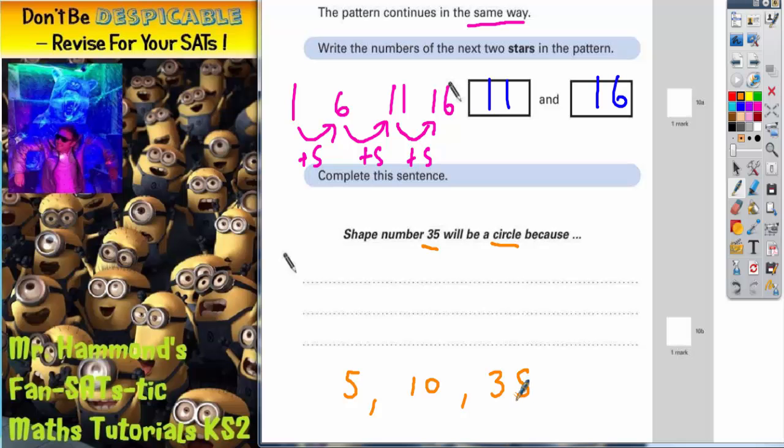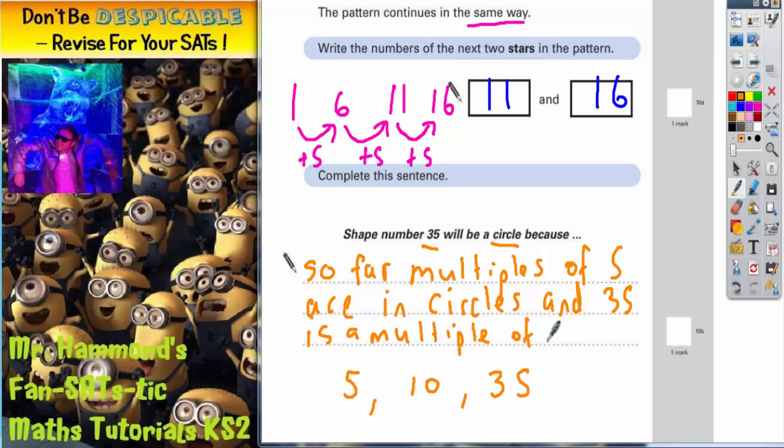So what we need to write is that so far, multiples of 5 are in circles, and 35 is a multiple of 5.